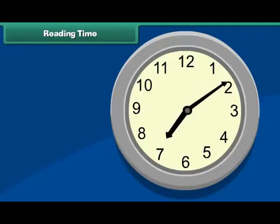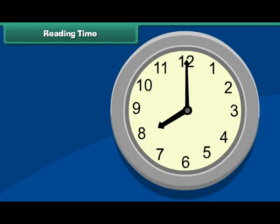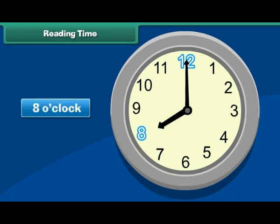Reading time. Look at this clock. Note the positions of the minute and hour hands on its face. The minute hand is pointing to 12 and the hour hand is pointing to 8. It means the time is 8 o'clock.